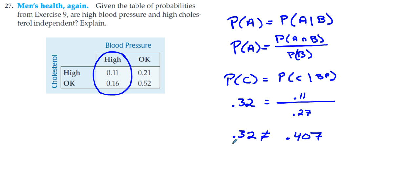These are not independent because if we look for people with high cholesterol in general, we have a 0.32 probability. If we look amongst the people with high blood pressure, we have a 0.407 probability. That means they're not independent. By putting that condition of high blood pressure on, we're changing the probability that we find someone with high cholesterol.